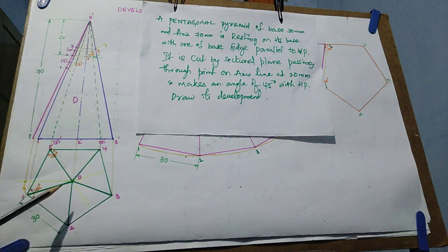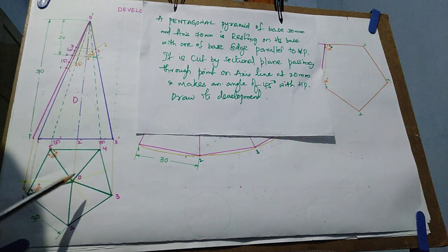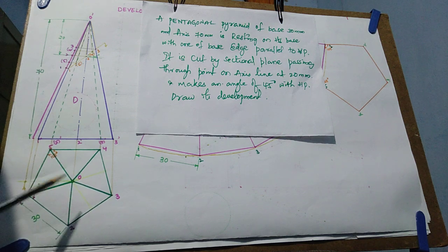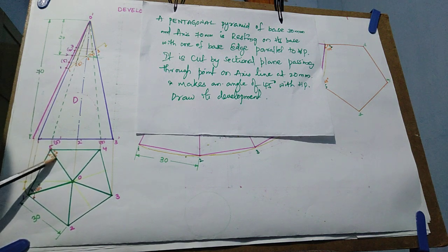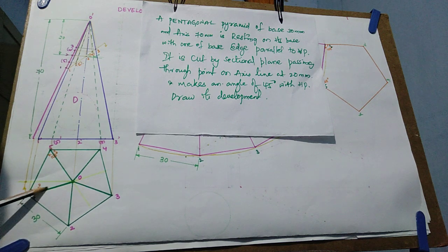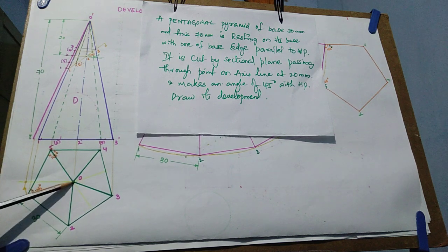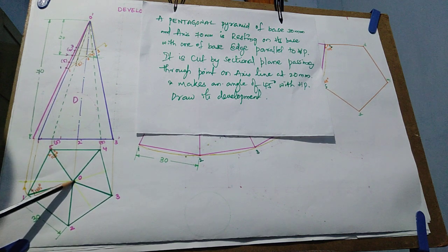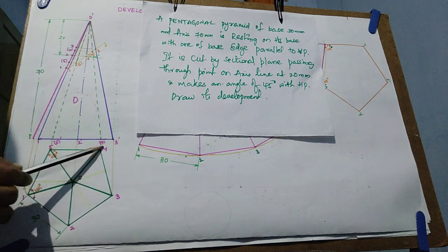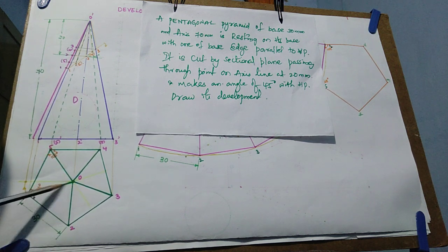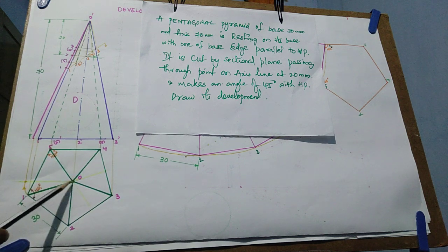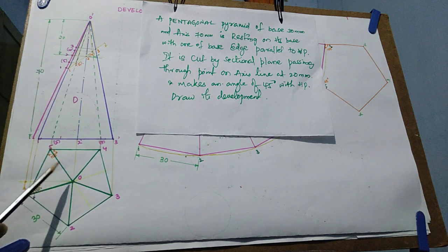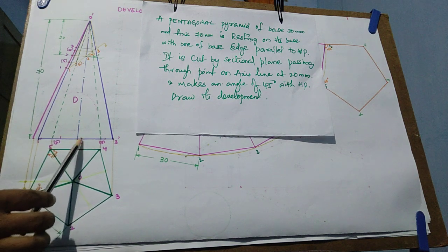Then find the center point of the pentagon, which is the apex point. From any two corners, draw the medians. Draw a median line from one corner and another from a second corner. You get the intersection point, which is the center point. Through this center point, join all the corners. Join the remaining two lines to the corners as well, and from this center point draw the axis line.